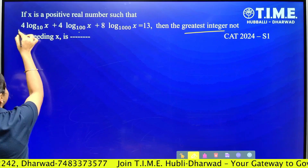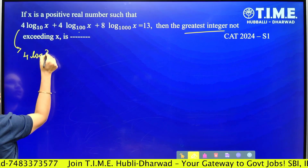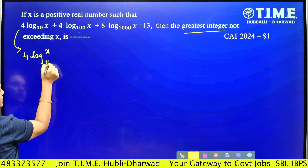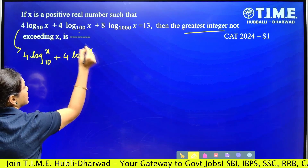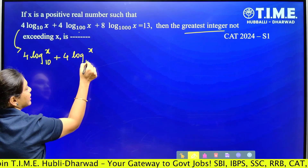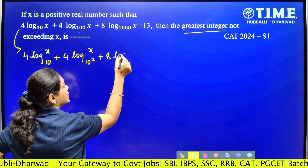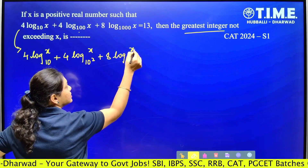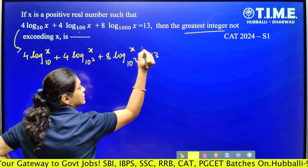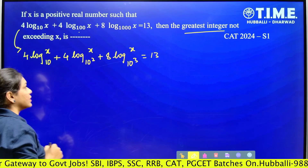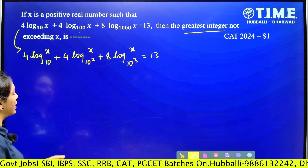Let's simplify. We write the first term as 4 log x base 10, plus 4 log x with base 100 — written as 10 squared — next 8 log x with base 1000, written as 10 cubed, all equal to 13. Still, if we observe, the bases are not the same here.